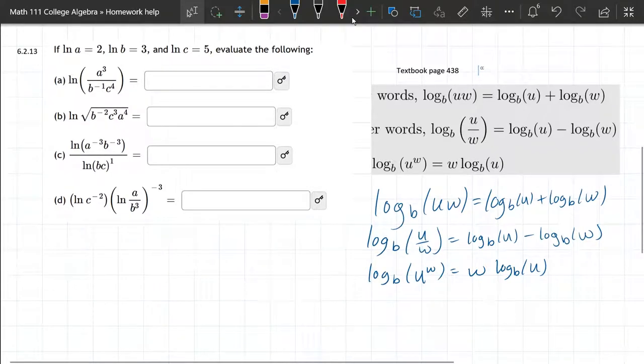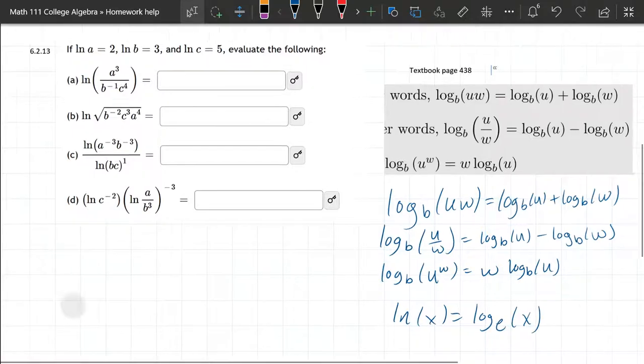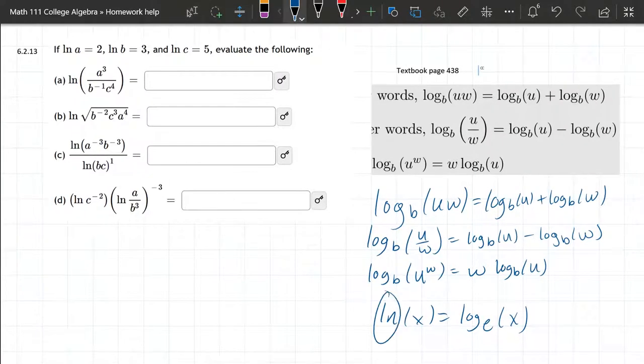We're going to look at this log question here, and we're going to use the properties on page 238. Now, all of our logs are natural logs, which means the base is base E. So when you see ln of anything, that means log base E of that thing. We don't really need to pay attention to the base. We're just going to write all of these as ln, because we can see over here they're all natural logs.